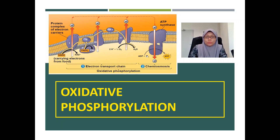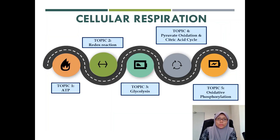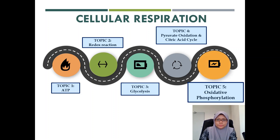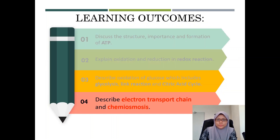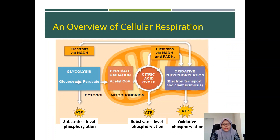In this video we are going to look at the last stages of cellular respiration, which is oxidative phosphorylation. We are moving towards our last topic in this chapter. At the end of the lesson, students should be able to achieve learning outcome number four, which is to describe the electron transport chain and chemiosmosis.